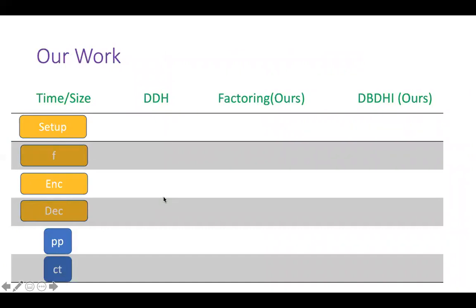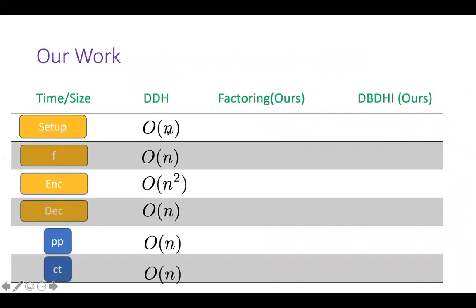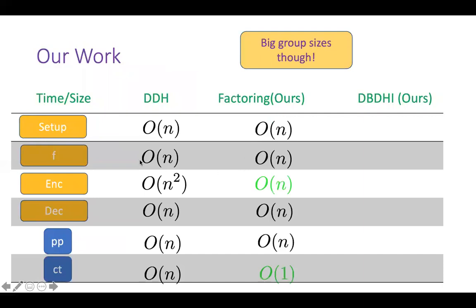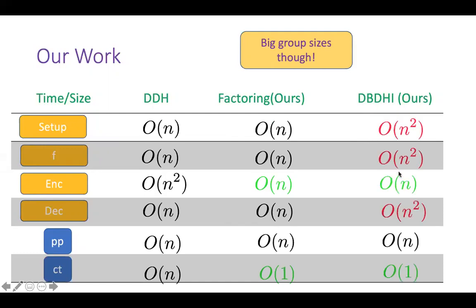Now let's compare the efficiency of our techniques with the missing block framework. Here are the time complexities of the DDH construction. Our first construction is based on the factoring assumption. We deviate from the missing block framework because it gives long ciphertext size — and that's precisely what we optimize. Our encryption algorithm and ciphertext size are exponentially better than the DDH construction, though since we rely on factoring, our group sizes are bigger, so there is some trade-off. We also extend the same techniques to pairing-based groups with the DBDH assumption, again optimizing encryption time and ciphertext size, though other algorithm complexities are higher.